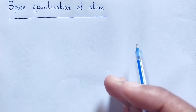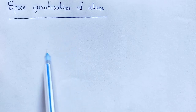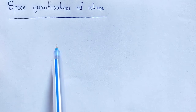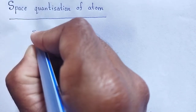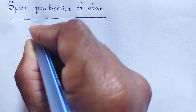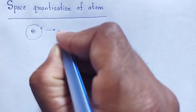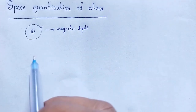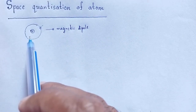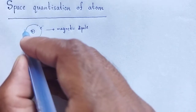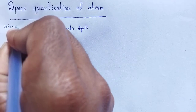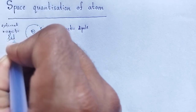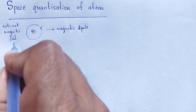When an electron revolves around the nucleus of an atom, it is equivalent to that of a magnetic dipole. When that magnetic dipole — means that atom — is placed in an external uniform magnetic field B vector, interesting phenomena occur.